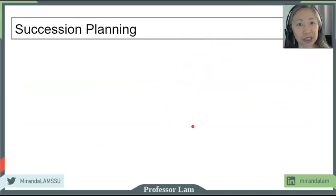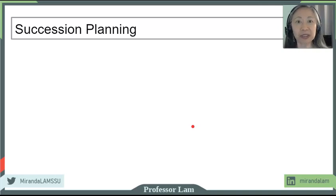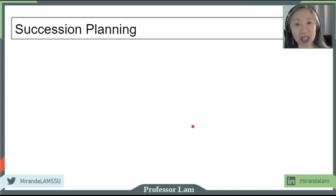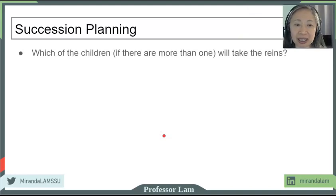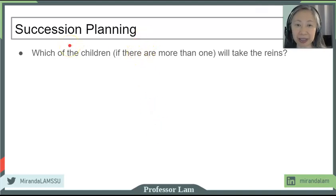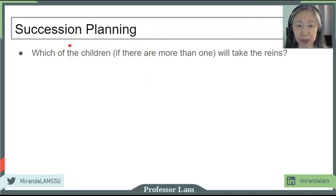If you decide not to go public and not seek outside funding, you can still be very successful. However, a company — especially a successful one — will often last longer than a single person's life. Eventually you may want to take some time off and decide what to do with the business. Succession planning is very important for any business, and you want to do that before the time comes — think ahead so that you can carefully plan for it.